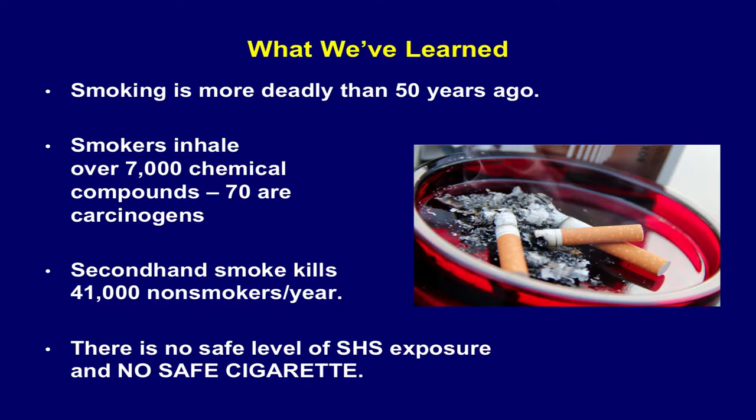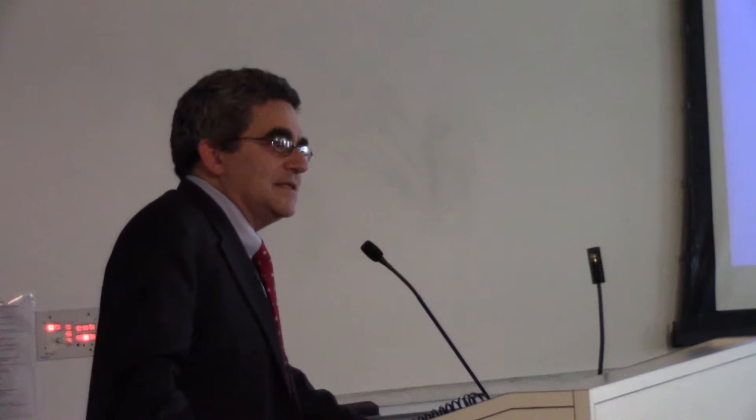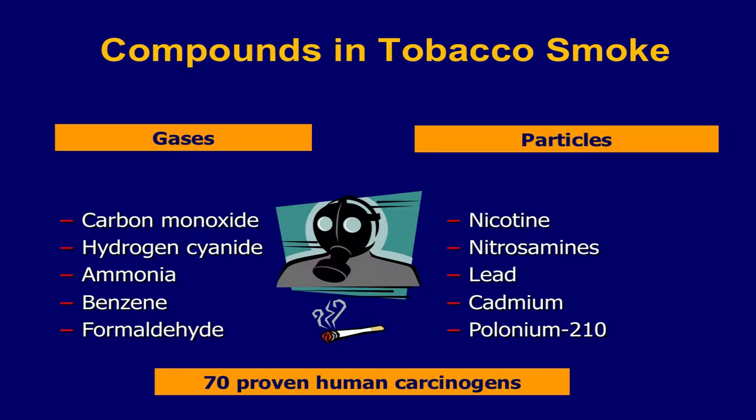It's still the leading cause of preventable disease and death in the U.S. The conclusions from the Surgeon General were that the epidemic is sustained by the industry, which deliberately misleads the public. What we've learned is that the products are actually more dangerous than they were 50 years ago. There are more than 7,000 chemicals in cigarette smoke, 70 of them are proven carcinogens. Secondhand smoke kills a lot of people. There's no safe level of secondhand smoke exposure and basically no safe cigarette.